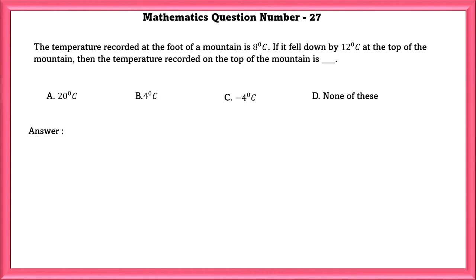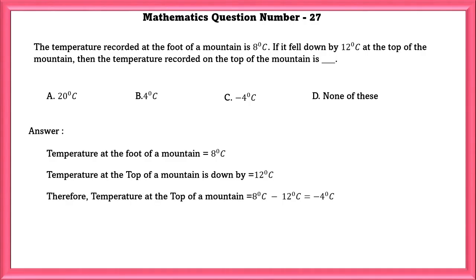Mathematics Question Number 27. The temperature recorded at foot of a mountain is 8 degrees Celsius. If it fell down by 12 degrees Celsius at the top of the mountain, then the temperature recorded on the top of the mountain is: temperature at the foot of a mountain is 8 degrees Celsius. Temperature at the top of the mountain is 8 degrees Celsius minus 12 degrees Celsius, which is equal to minus 4 degrees Celsius.